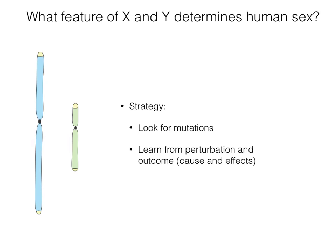What features of X and Y determine human sex? The approach followed was to look for mutations, to learn from the type of perturbation and from the outcome. In other words, to determine cause and effects.